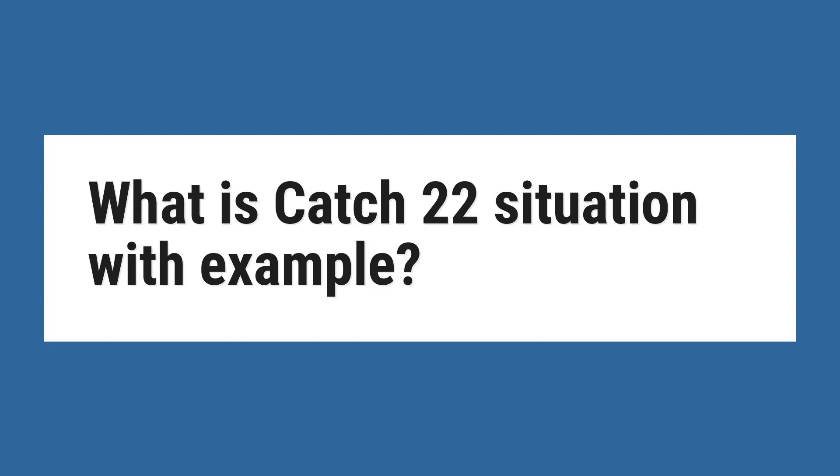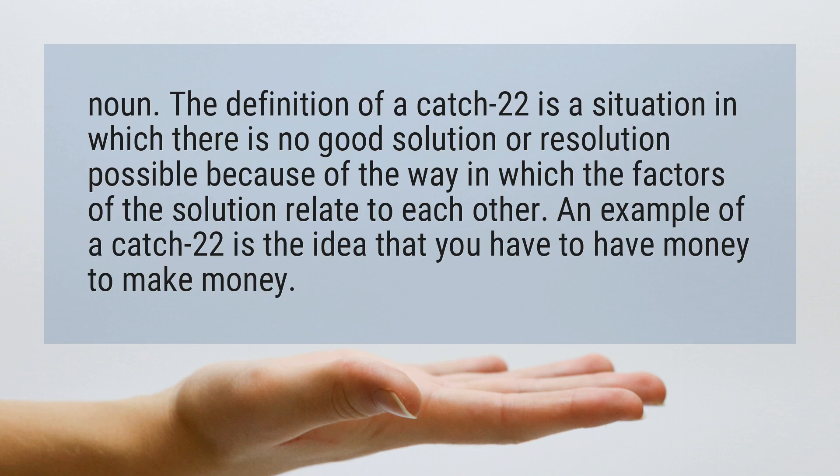What is a Catch-22 situation with example? Noun. The definition of a Catch-22 is a situation in which there is no good solution or resolution possible because of the way in which the factors of the solution relate to each other. An example of a Catch-22 is the idea that you have to have money to make money.